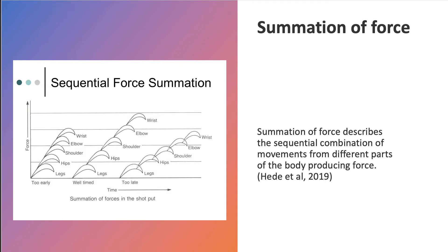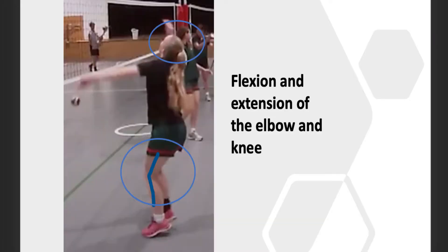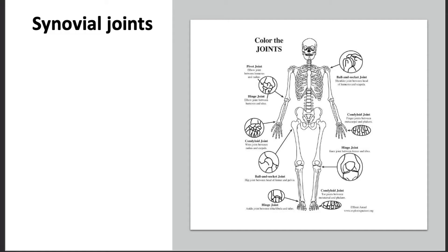One of the reasons for this is that I do not summate much force. I need to summate more force so that I can overcome the contact force of drag force. As according to Newton's first law of motion, it demonstrates that there is an exterior force acted upon the ball, thus making the ball decelerate and in turn come to a stop. Currently, my hit only uses the extension of the hinge joint in the elbow and gradual extension of the hinge joint in the knee. This means that I am only engaging my bicep as a prime mover with an antagonist of the tricep, as well as using the quadricep as a prime mover and the hamstring as the antagonist. However, the quadricep isn't being maximised to its full potential.